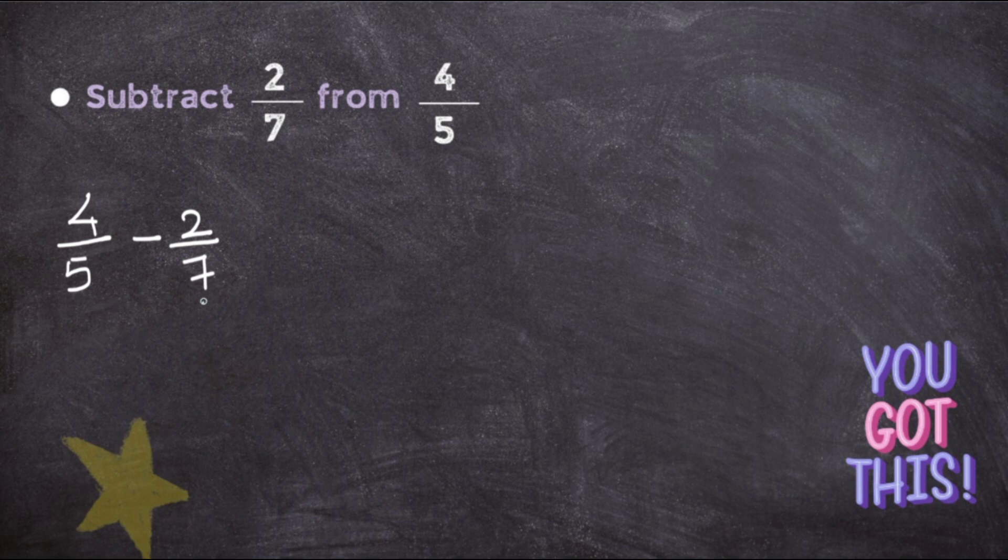Now you just have to follow the steps. First step is to check whether the denominator is the same. No. Go to the second step, which says check whether it is related. 5 and 7 are not at all related. You cannot multiply or divide anything with 5 or 7 which will give you 5 and 7.